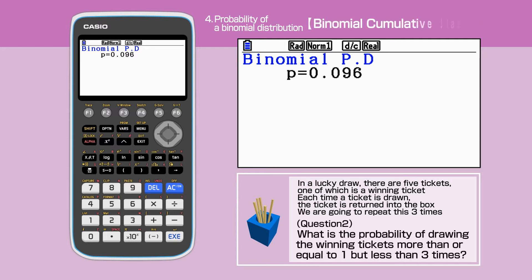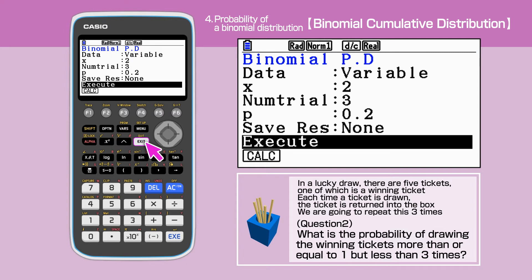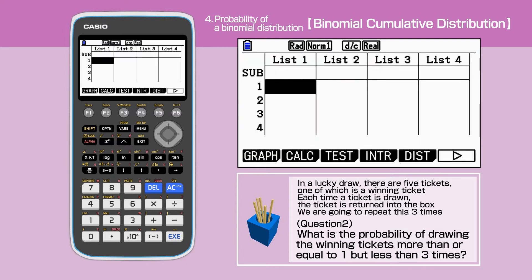We are solving the second question next. Let's go back to the original screen by pressing exit, then exit. Press F5, distribution, then F5 to select binomial.